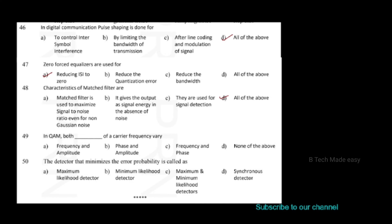In QAM, both dash of a carrier frequency vary. The options are: frequency and amplitude; phase and amplitude; phase and frequency; none of these. In QAM, both phase and amplitude of the carrier frequency vary, so the answer is phase and amplitude.